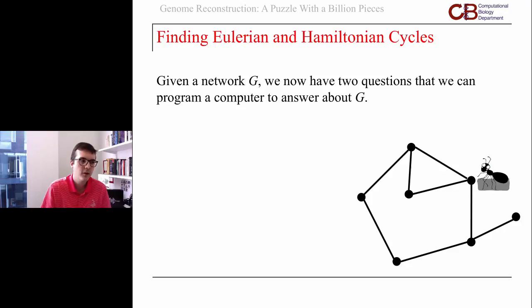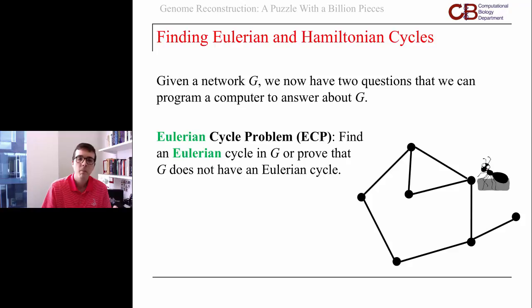In the Eulerian cycle problem, we say find an Eulerian cycle in the network. Input the network and produce a yes or no answer. Does that network have an Eulerian cycle? And if so, what is it? Or can the computer verify that the network doesn't have one? We're thinking of programming an ant to simulate the process of walking through the network.